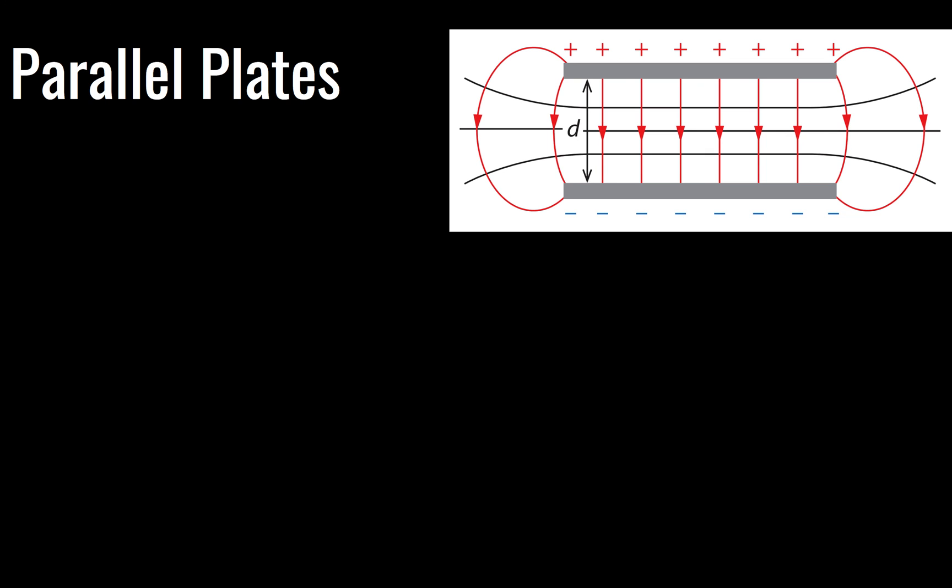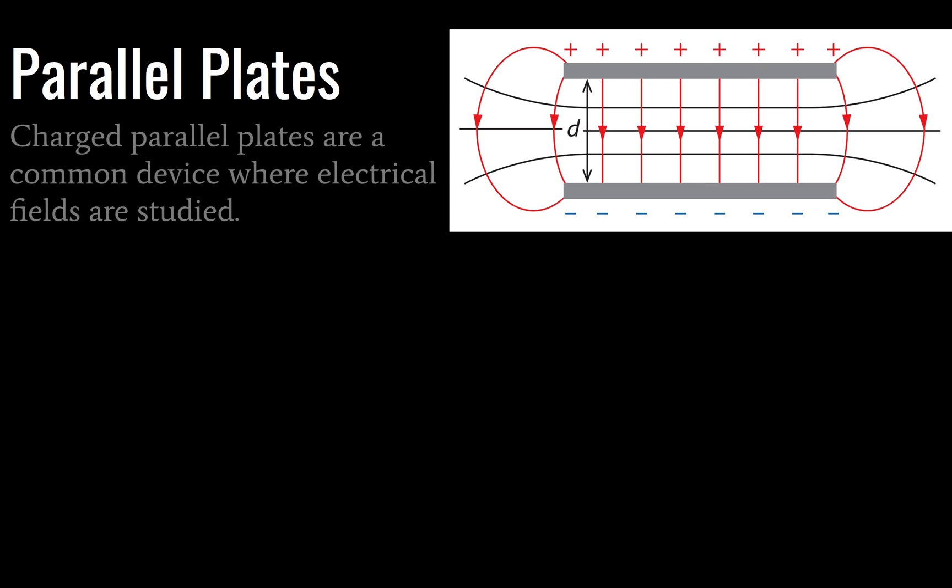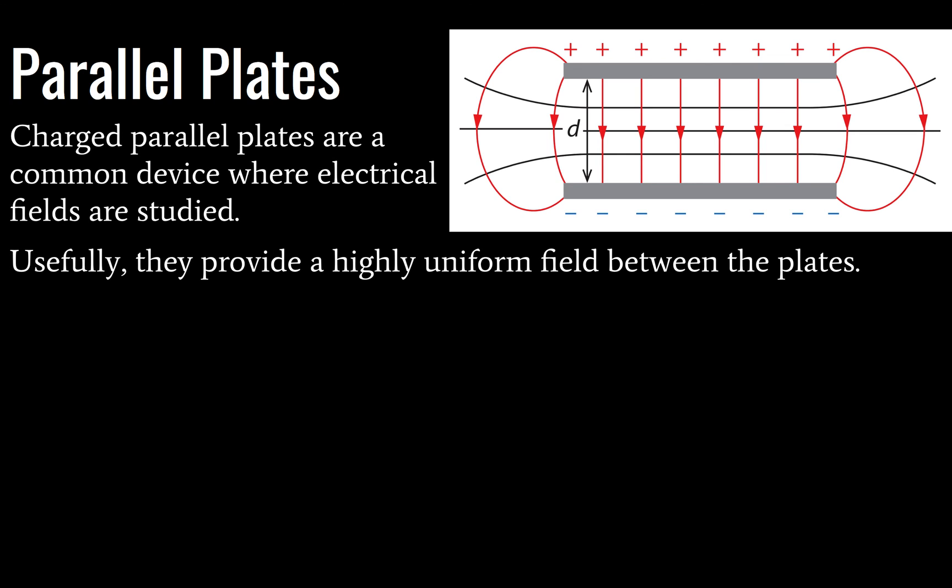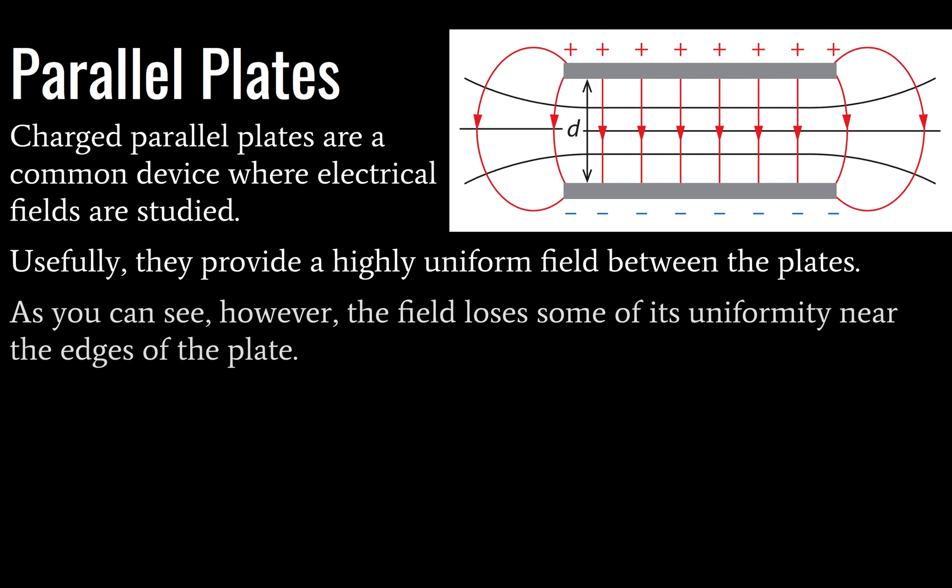Here we have parallel plates, and these are very important in the study of electric fields. And the reason for that is because the area between the plates, or volume rather, is going to have a very uniform electrical field. So if you wanted to study forces on charged particles, just as an example, you would want this highly uniform field. So near the edges of the plate, you can see that the field becomes less uniform. It becomes distorted, and that's just due to the nature of electric fields.